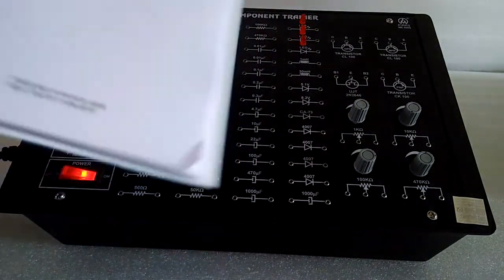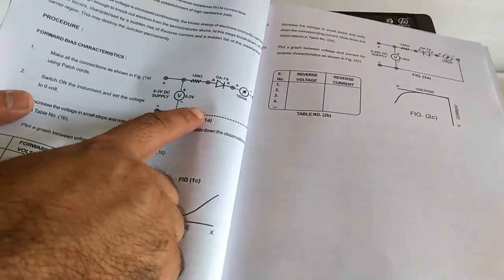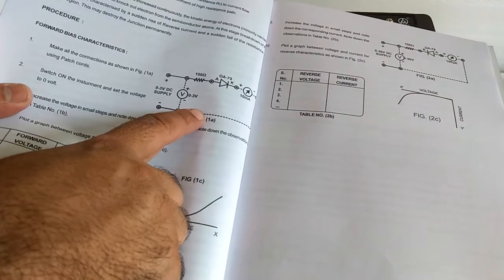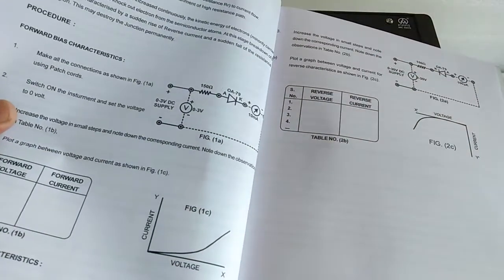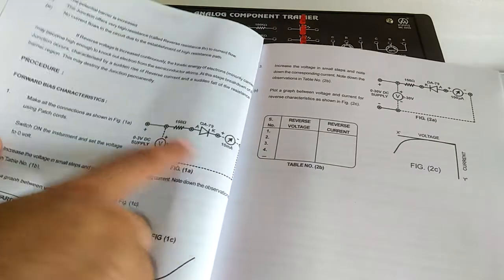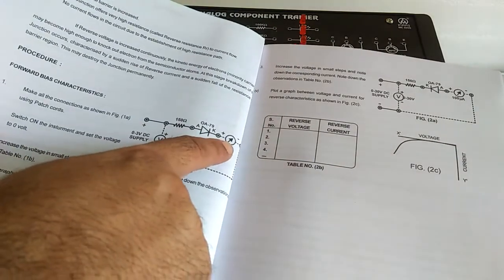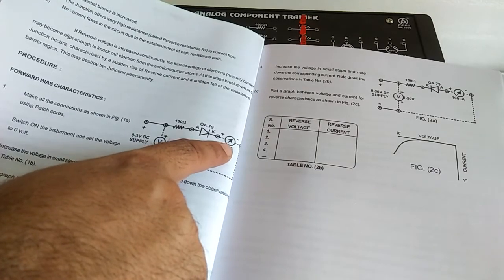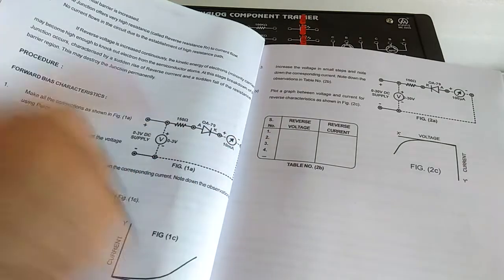Suppose you have to connect the circuit. Here we have characteristics of the p-n junction. Then here we have required one voltmeter and one current meter to connect in the circuit.